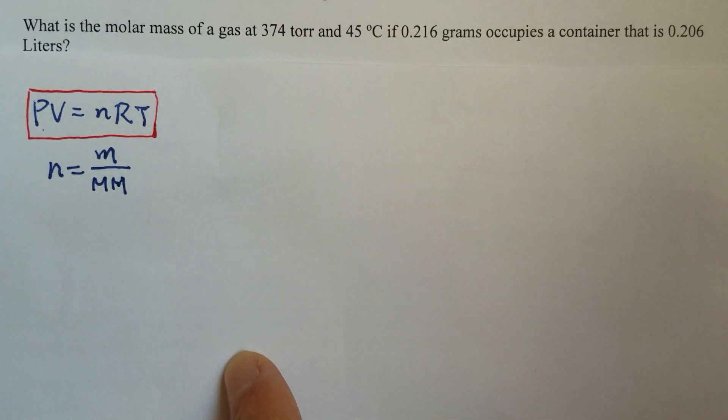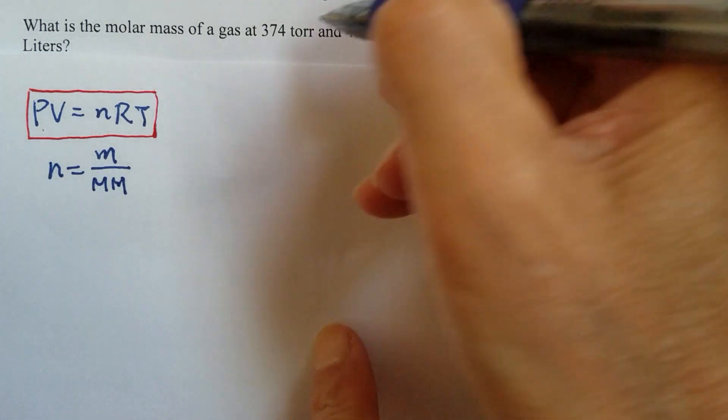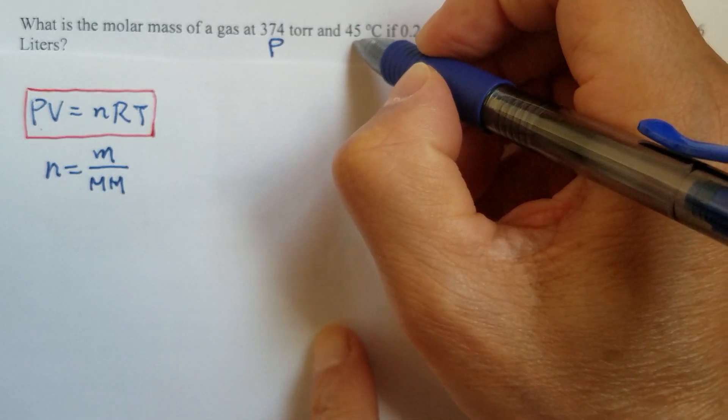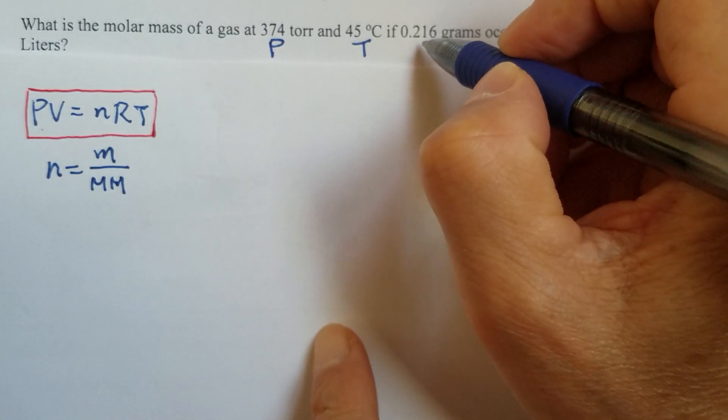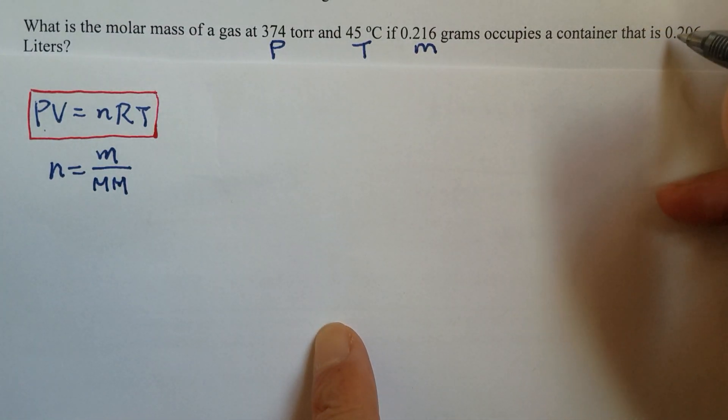Let's label the quantities given in the problem first. That's pressure, temperature, mass, and volume.